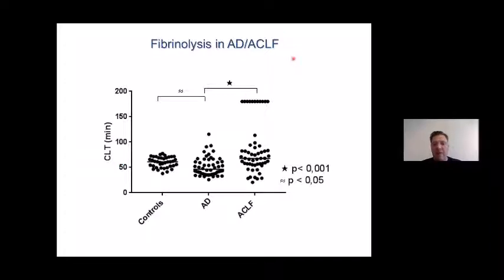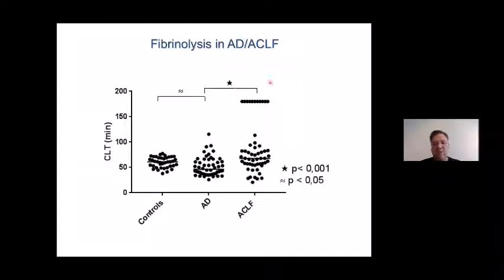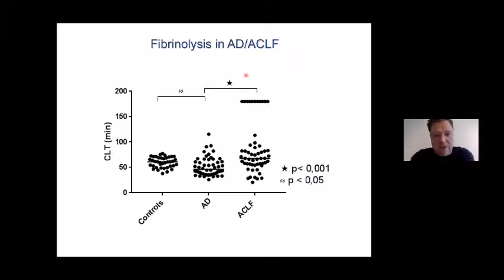Finally, the fibrinolytic system in acute decompensation and ACLF: this is a complex situation. Compared to controls, in acutely decompensated patients and ACLF, some patients clearly have accelerated hyperfibrinolysis which may predispose to bleeding. But there are also individuals — particularly in ACLF — that have inhibited fibrinolysis, and just as in ALF, a proportion of patients do not lyse at all in our test. Interestingly, these are largely patients with sepsis, and in sepsis without underlying liver disease, fibrinolysis is also known to be inhibited. This is complex and may differ from patient to patient and also over time.